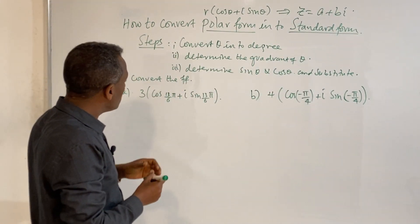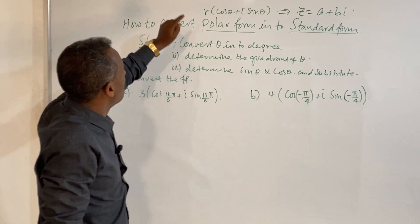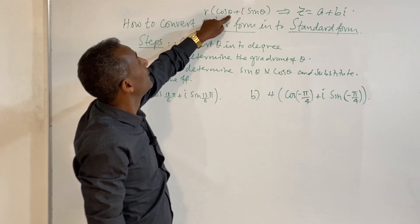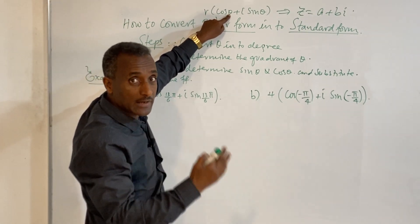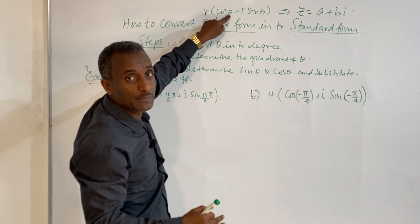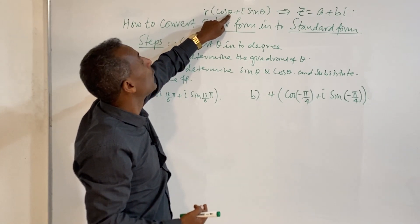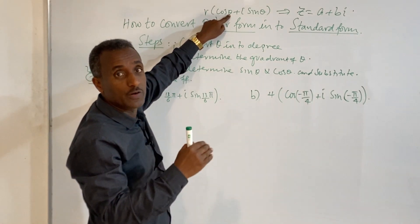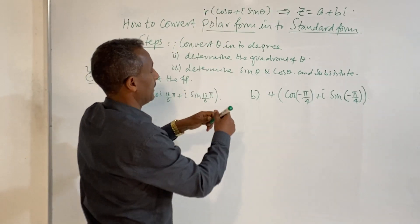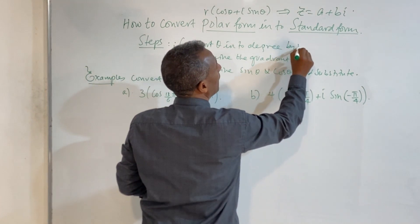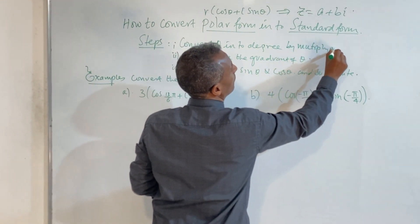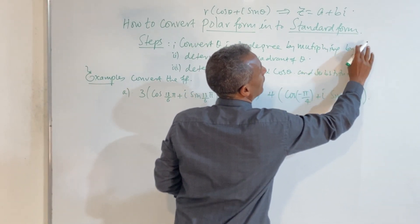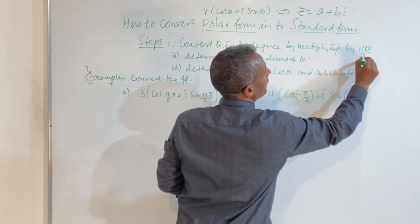We have three steps. First, convert theta from radians to degrees. If theta is in the form of pi over something, multiply by 180 over pi to convert to degrees.